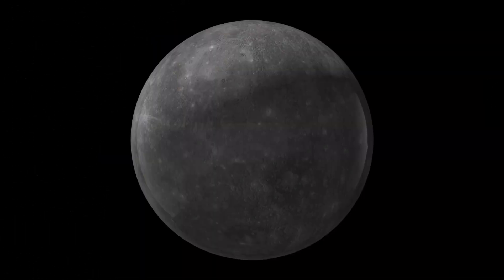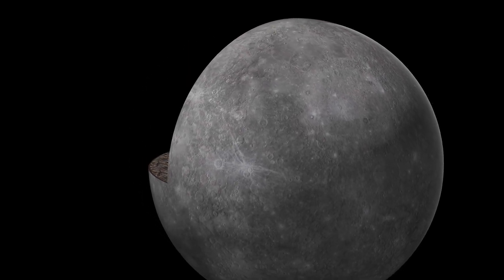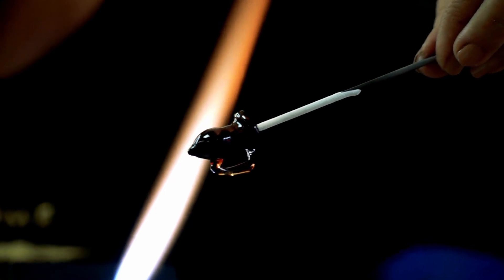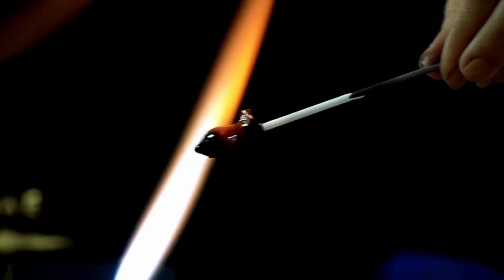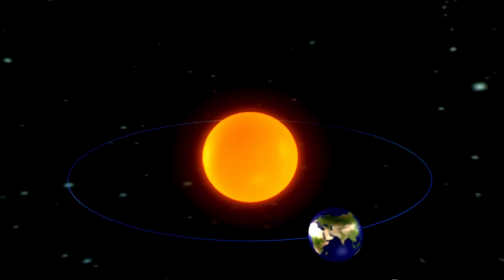Because the comet is darkening. Not dimming from distance, not fading from solar light - it's absorbing light. The latest readings show its albedo, the measure of how much light it reflects, has dropped to near zero. In simple terms, it's turning black, as if it's swallowing every photon that touches it.